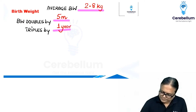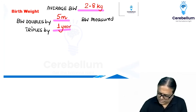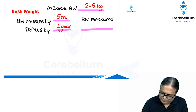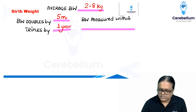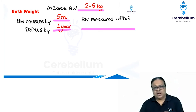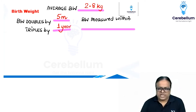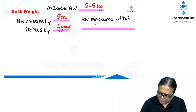Birth weight must be measured within how much time of delivery? Ideally it should be measured as soon as possible — half an hour, one hour — but there has to be some outer limit. Suppose it is a home delivery and the medical officer comes to know six hours later; how will you measure it as soon as possible? So the maximum is within 24 hours.